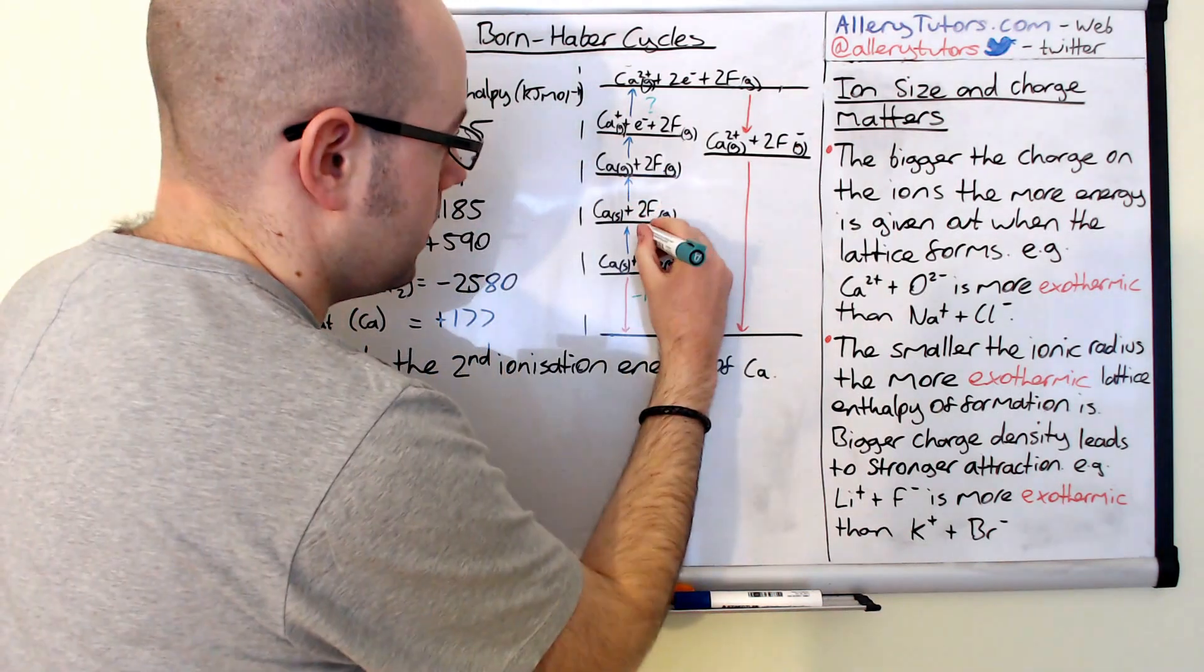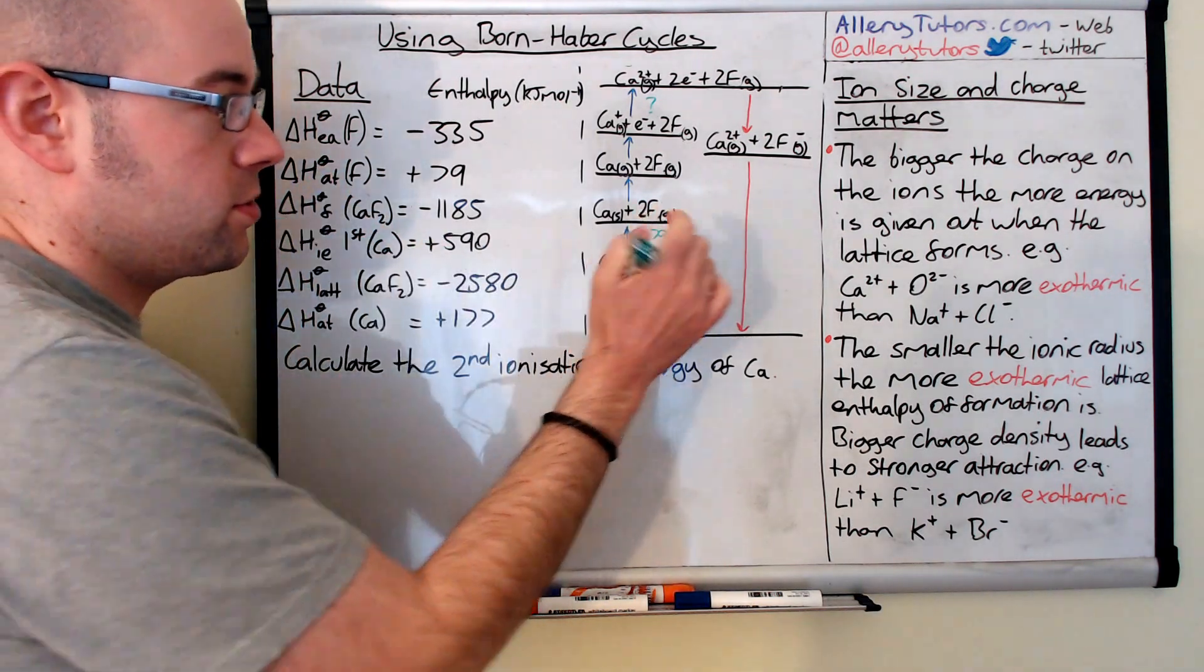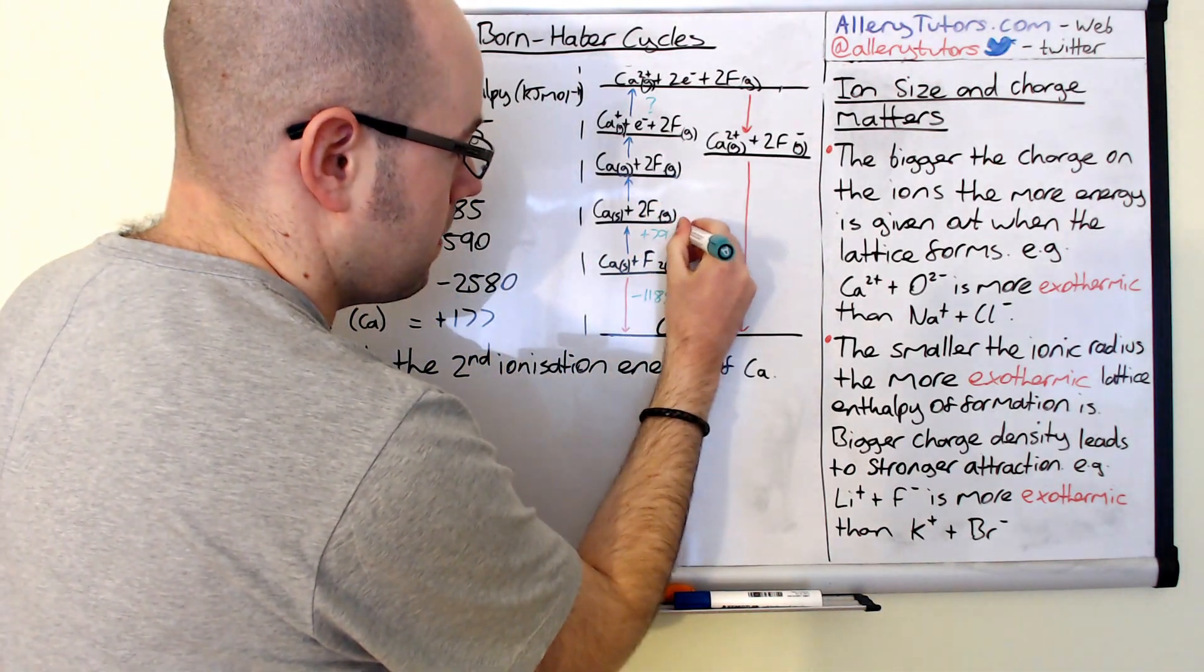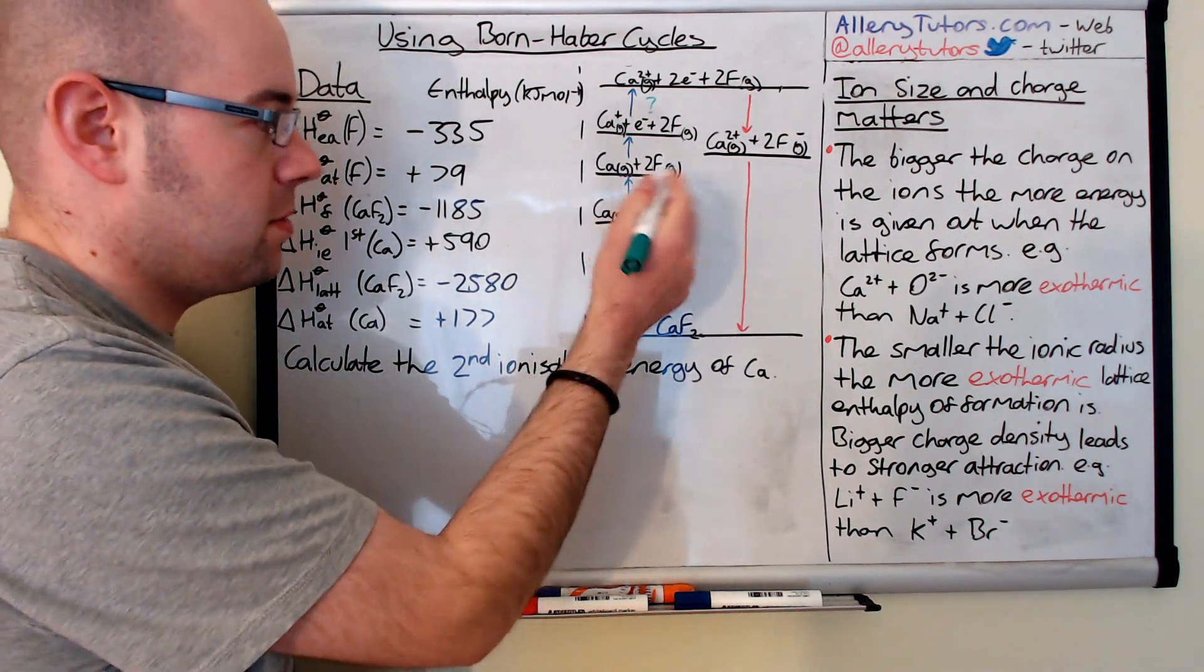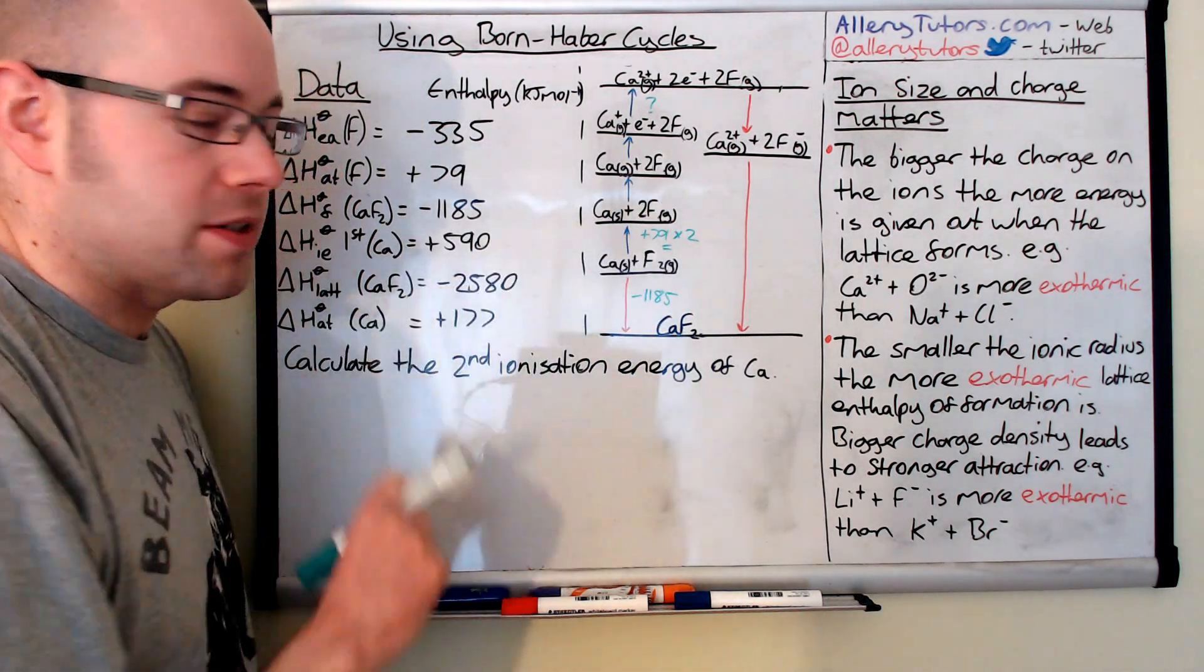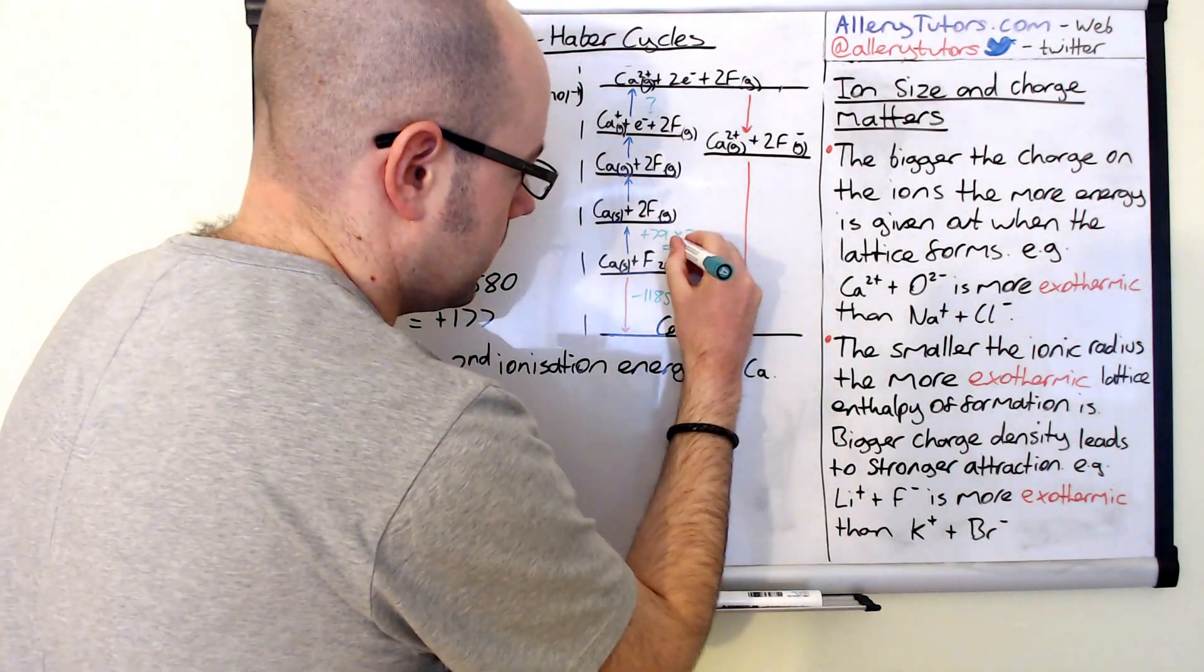But as you can see this data is for one fluorine. We need two. So we need to multiply that by two because we have atomized two fluorines to get to F. So the answer to that 79 times two is 158 and that's going to be plus.